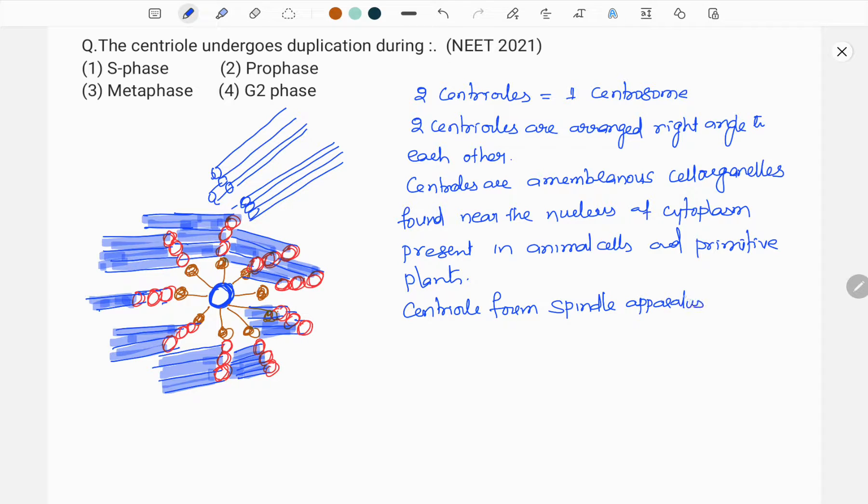We know spindle apparatus is very much required for pulling the chromosomes towards opposite poles during the anaphase of both mitosis and meiosis.